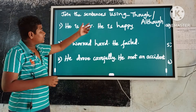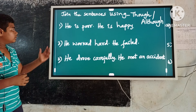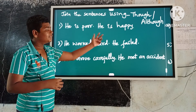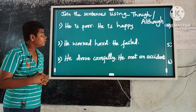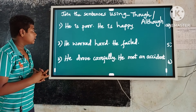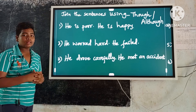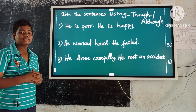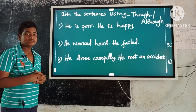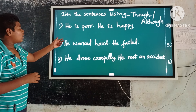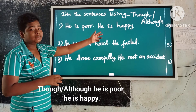Join the sentences using though or although. Example number one: He is poor. He is happy. These are contrast ideas. Here the first occurring sentence is 'he is poor.' Keep though or although before it, then a comma before the second sentence. So the answer is: Though or although he is poor, he is happy.